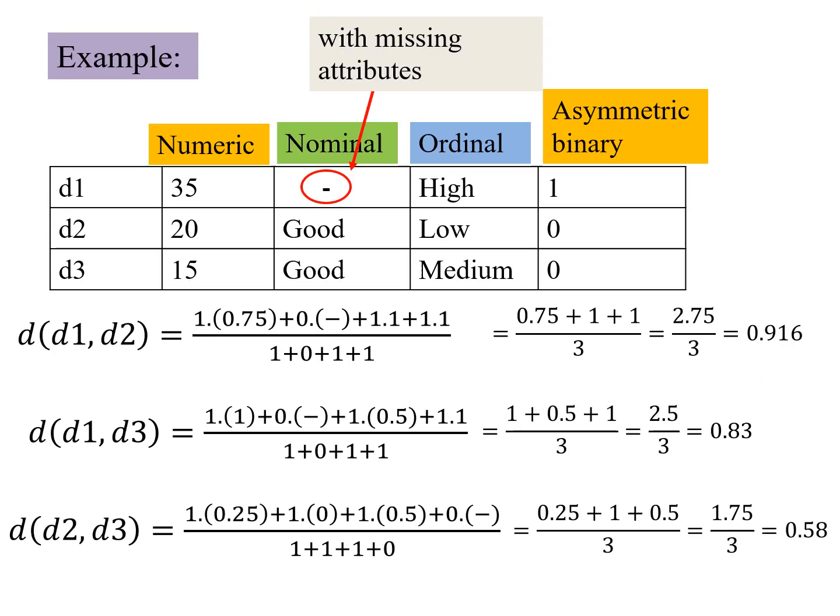Now we take, we take this example, where we have a case of missing attribute, and also an asymmetric binary attribute. This is a very small example, to illustrate what you have mentioned earlier. So we note here, that the data point D1, has a missing value.